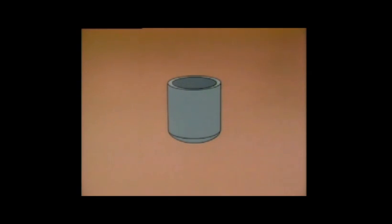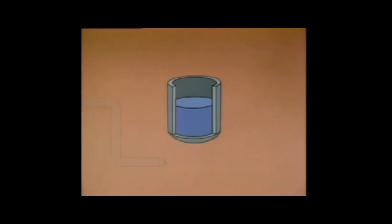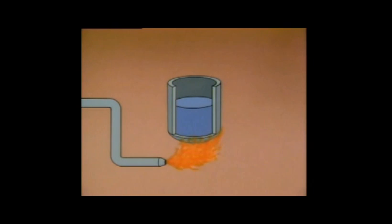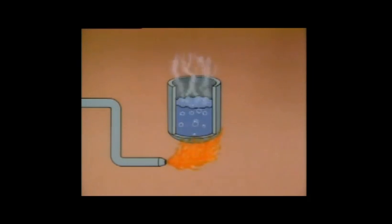We'll assemble a simplified boiler. This is a container, or shell, with water in it — the water takes care of one of the requirements for steam. We'll also add a pipe to provide a continuous supply of fuel to the combustion area, that is, the area beneath the shell. Heat from the flame satisfies the second requirement for steam production. As the shell heats up, heat is transferred from the shell to the water, and the water boils, producing steam.